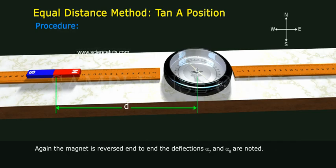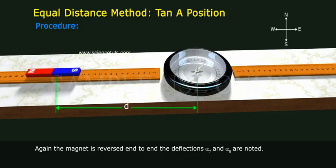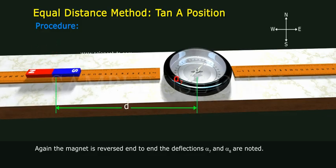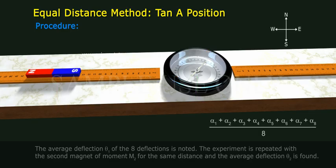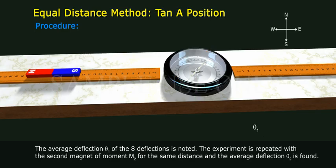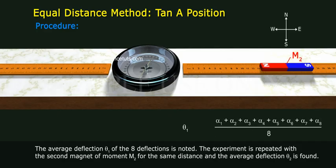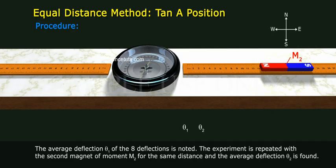Again the magnet is reversed end to end and deflections alpha 7 and alpha 8 are noted. The average deflection theta 1 of the 8 deflections is noted. The experiment is repeated with the second magnet of moment M2 for the same distance and the average deflection theta 2 is found.